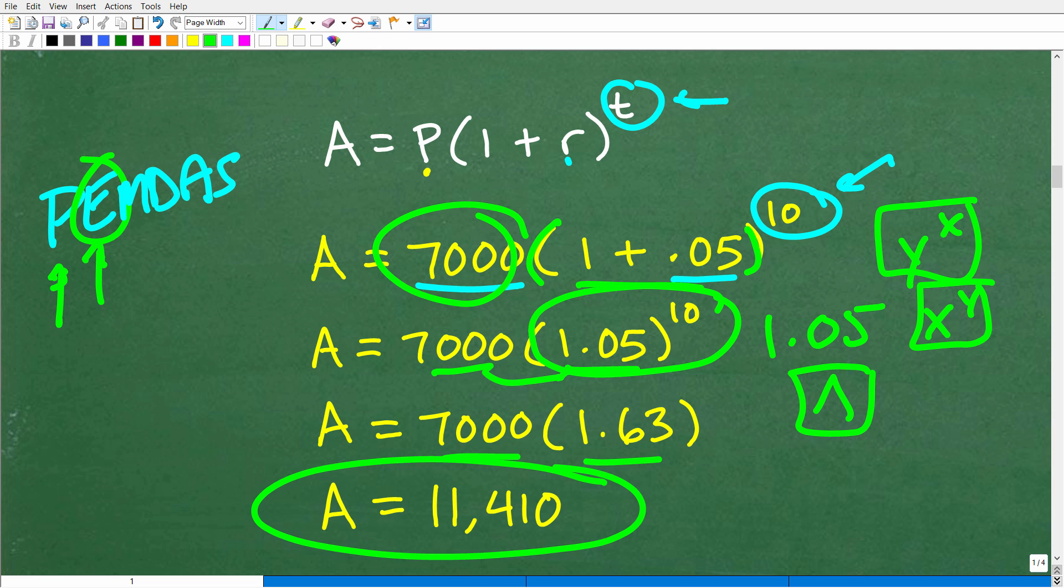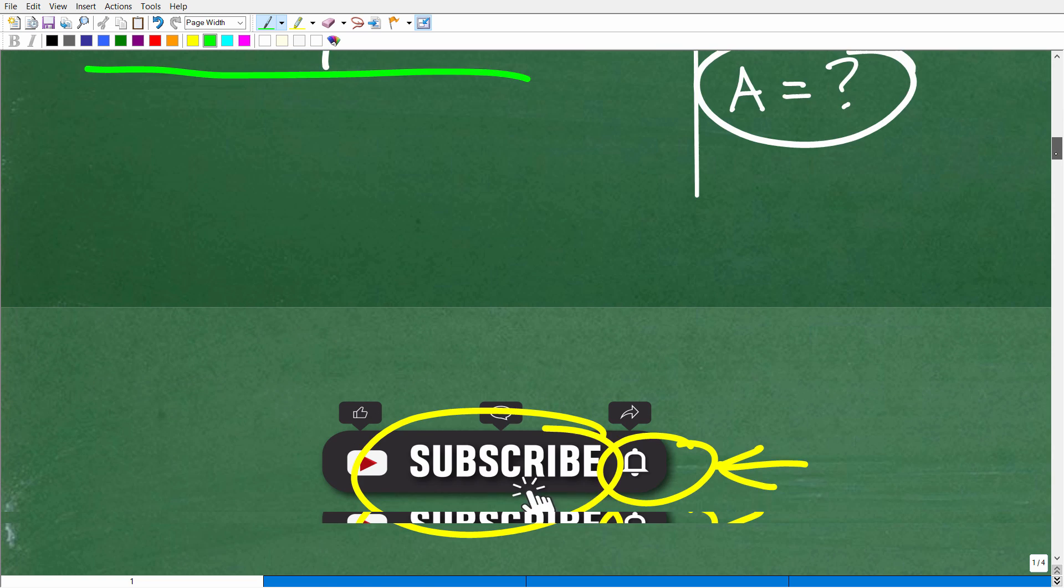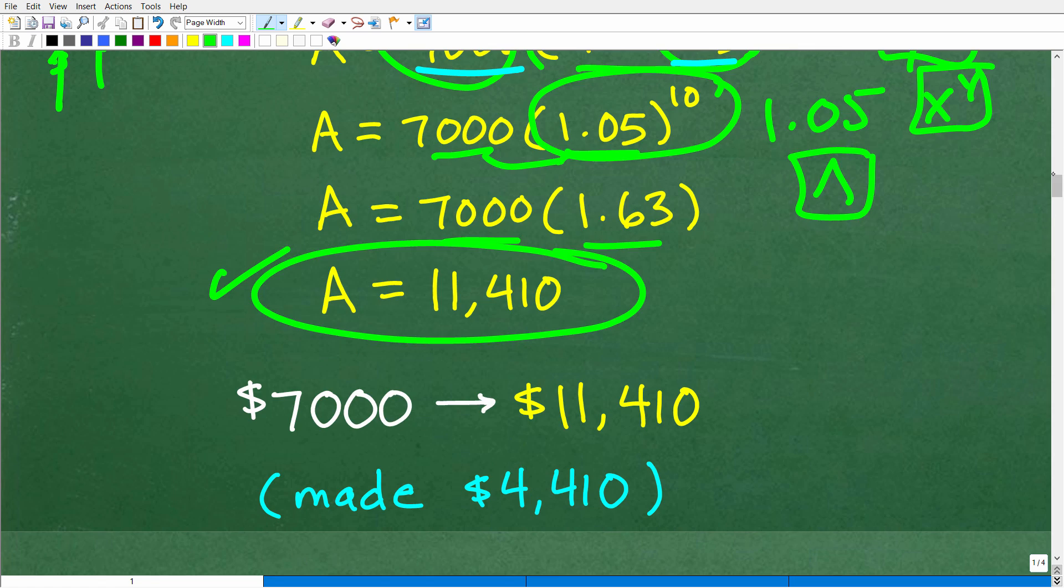So we invested $7,000 for 10 years at 5% annual compound interest, and our investment is worth $11,410. But the question was what? The question was, you've got to be very careful here, how much money did we earn? We already had that $7,000. The investment didn't earn that for us, right? So what we made on the investment, we have to take this amount, the total amount, subtract away our principal. So we made $4,410. Hopefully, this all made sense.